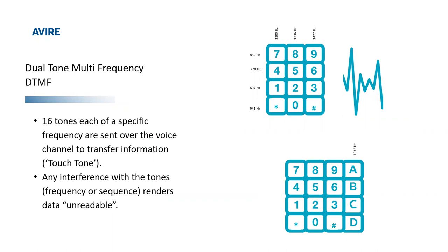A little bit more on dual tone multi frequency: we typically understand there to be 12 tones on a telephone keypad — 0 to 9 plus star and hash. In the context of machine-to-machine communication, there are an additional four tones: A, B, C, D. An important point — any interference with the tone, whether the frequency changes or the sequence of tones is out of order, will render the data being transferred unreadable. This is a system which is inherently very susceptible to any kind of interference.